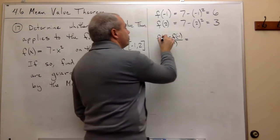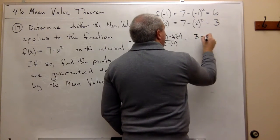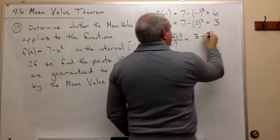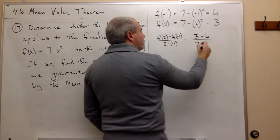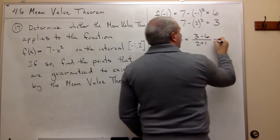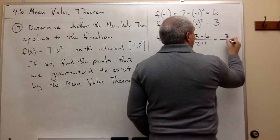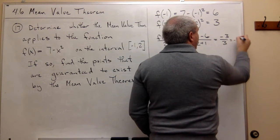In other words, f of 2, we figured out was 3, minus f of negative 1 was 6, over 2 minus minus 1, which is plus 1. In other words, I get minus 3 over 3, or negative 1.